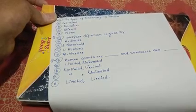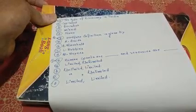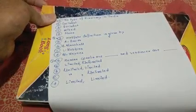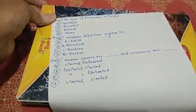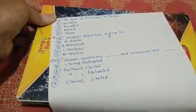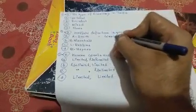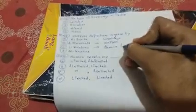The next question is a revision: 'Welfare definition is given by whom?' As discussed earlier, the wealth definition is given by Adam Smith, the welfare definition is given by Alfred Marshall, and the scarcity definition is given by L. Robbins. Please comment if you remember what we discussed. L. Robbins gave the scarcity definition — resources are scarce but wants are unlimited.